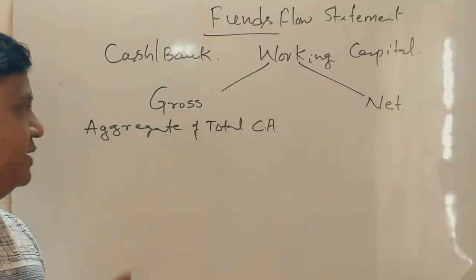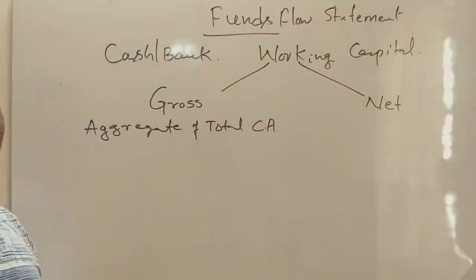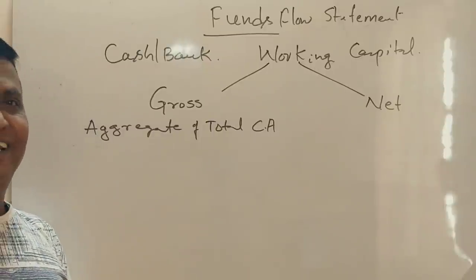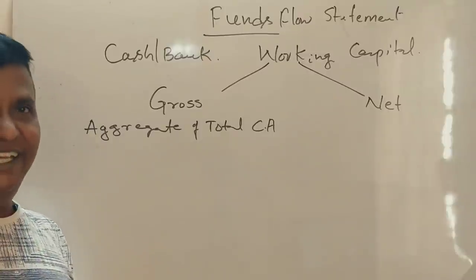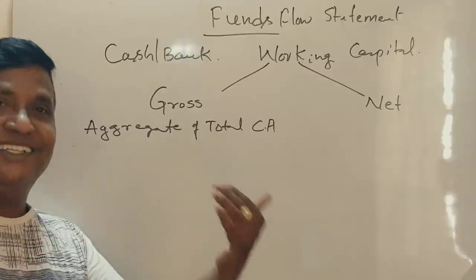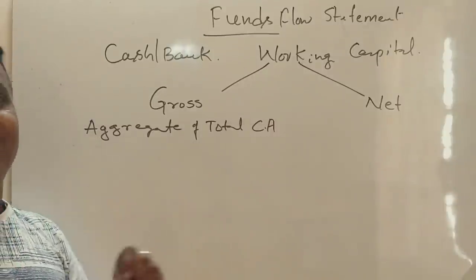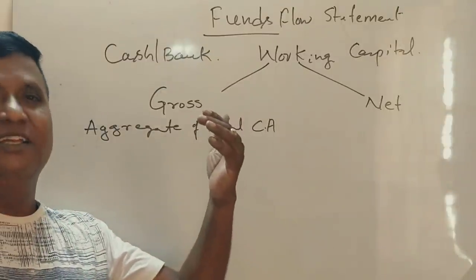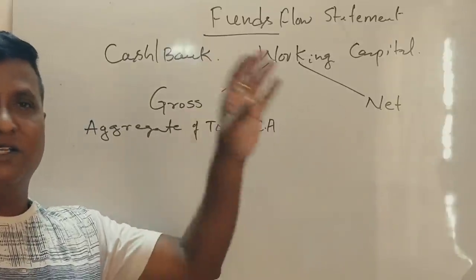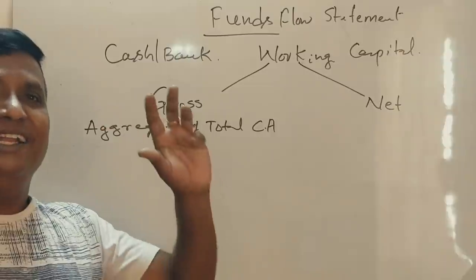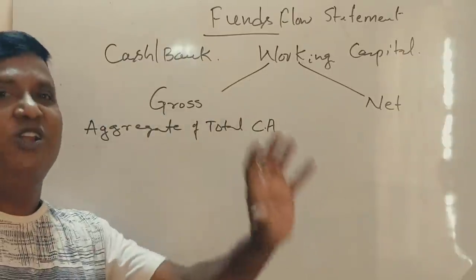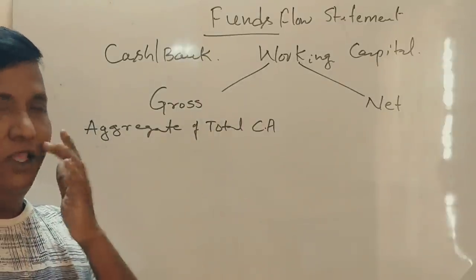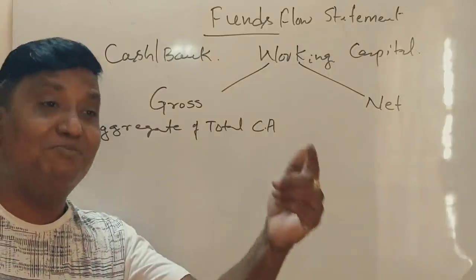What are current assets? Assets are classified as non-current assets and current assets. Non-current assets include fixed assets such as tangible assets — land, building, plant, machinery, motor vehicle — and intangible assets like goodwill, patents, copyrights, and trademarks. Non-current investments include long-term investments of more than one year.